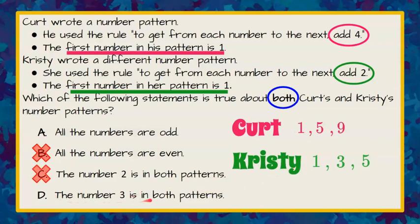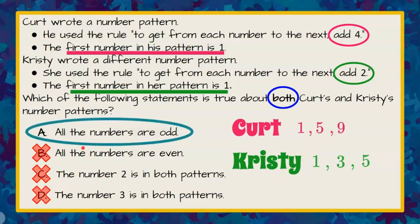And D, the number three is in both patterns. Well the number three is in Christy's but it's not in Kurt's so we can rule that out. So we are correct. All the numbers in both number patterns are odd and our answer choice is A.